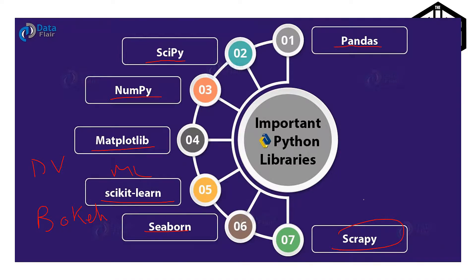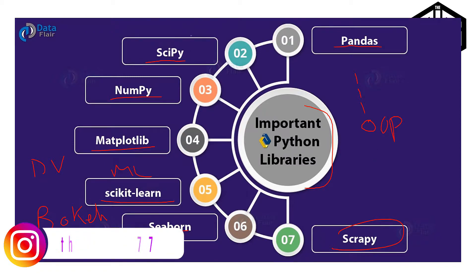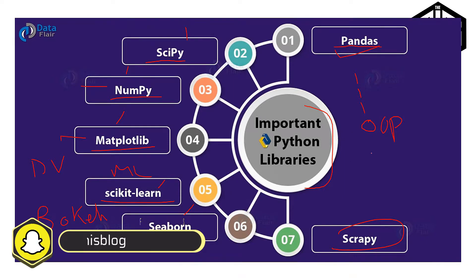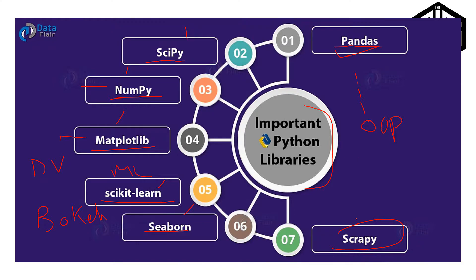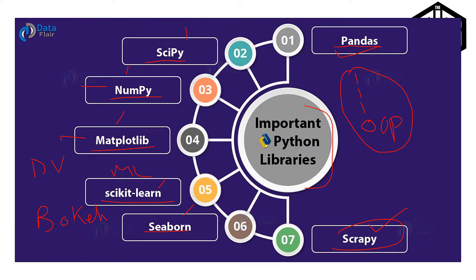We also need scikit-learn for machine learning and scrapy for scraping data. These are the important Python libraries that should be covered in this track. So we need introduction to Python, intermediate Python, advanced Python, object-oriented programming, data visualization, introduction to numpy, matplotlib, pandas data manipulation, and how to scrape data from Twitter or websites. These are the things that should be covered — now let's go to the website and see if they are.